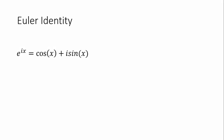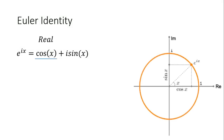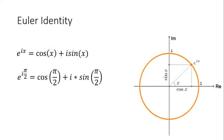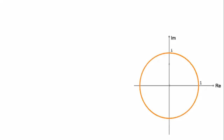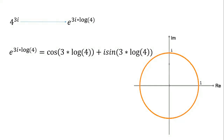Euler's identity states that e to the power of an imaginary variable equals cosine of that variable plus i times sine of that variable. In the complex plane, cosine represents the real part while sine represents the imaginary part. For example, replacing x with pi over 2 gives cosine = 0 and sine = 1; multiplied by i we get i as a result. Any real number to the power of a complex number can be written in sine and cosine form — for example, 4 to the power of 3i can be transformed to e form and then converted to sine and cosine.